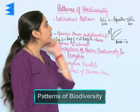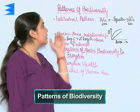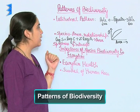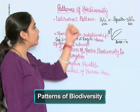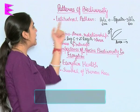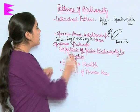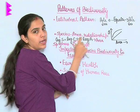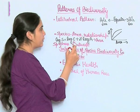Patterns of biodiversity: what are the patterns of biodiversity? Two patterns have been observed — the latitudinal pattern and the species-area relationship.